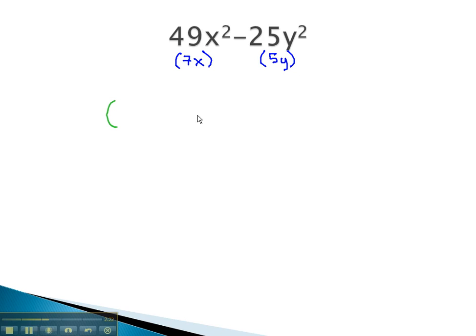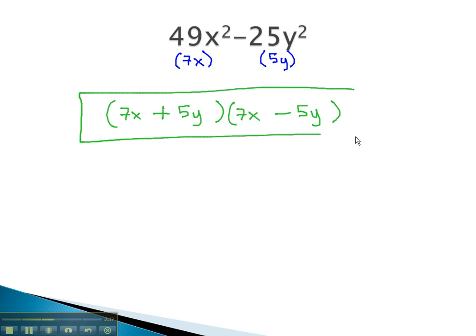We can now factor this quickly to the sum and the difference of the square roots, 7x plus 5y times 7x minus 5y. And this is now our factored solution.